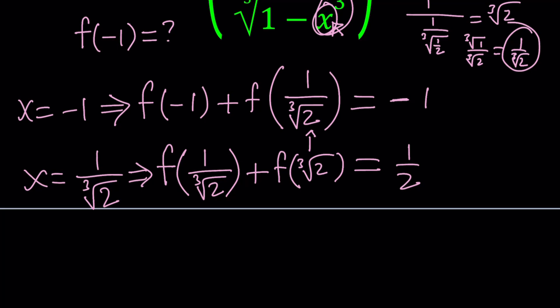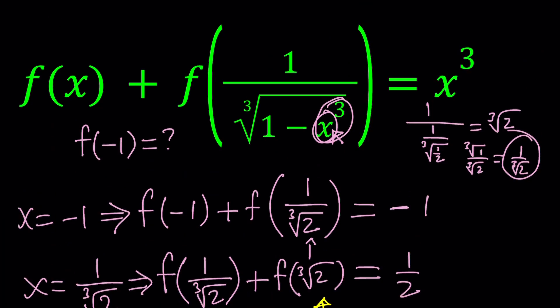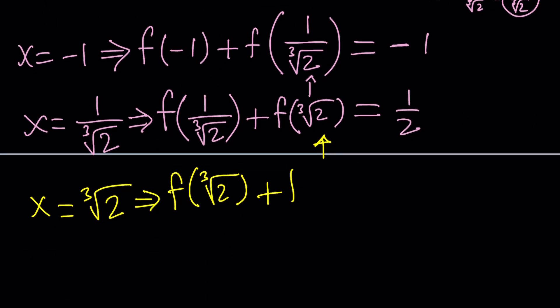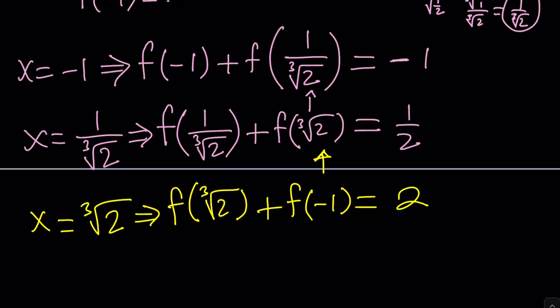We got a new input, ∛2, so our next step is replacing x with ∛2. For the first part, we get f(∛2). For the second argument: (∛2)³ = 2, and 1 − 2 = −1; the cube root of −1 is −1, and 1 divided by −1 is −1. So this gives us f(−1). On the right-hand side, cubing ∛2 gives 2. So our third equation is f(∛2) + f(−1) = 2.